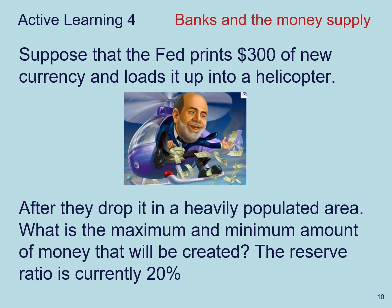For the next active learning exercise, suppose the Fed prints $300 of new currency and loads it up in a helicopter, then drops it into a heavily populated area. Just like before, think about the maximum and minimum amount of money that will be created. The reserve ratio is the same at 20%. Note that this example is not exactly the same as the previous one, so be careful.